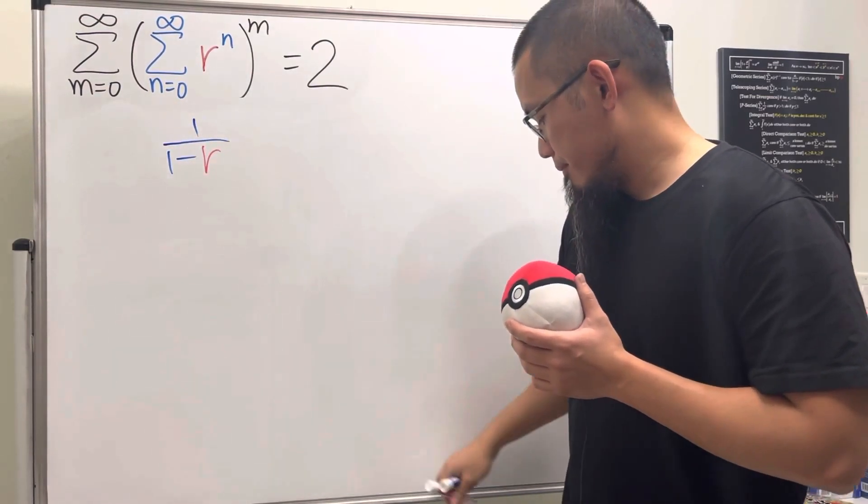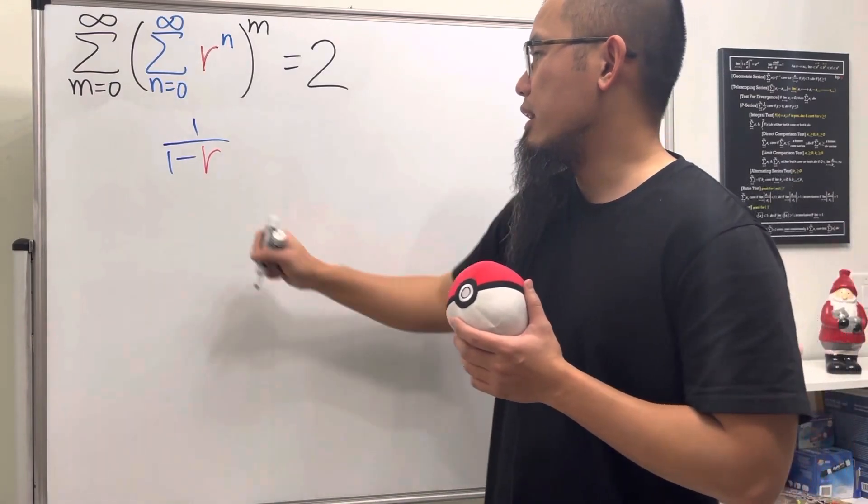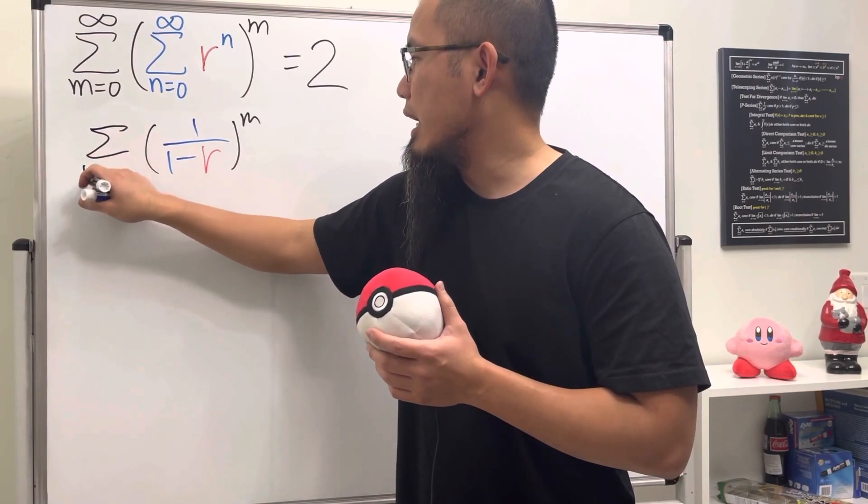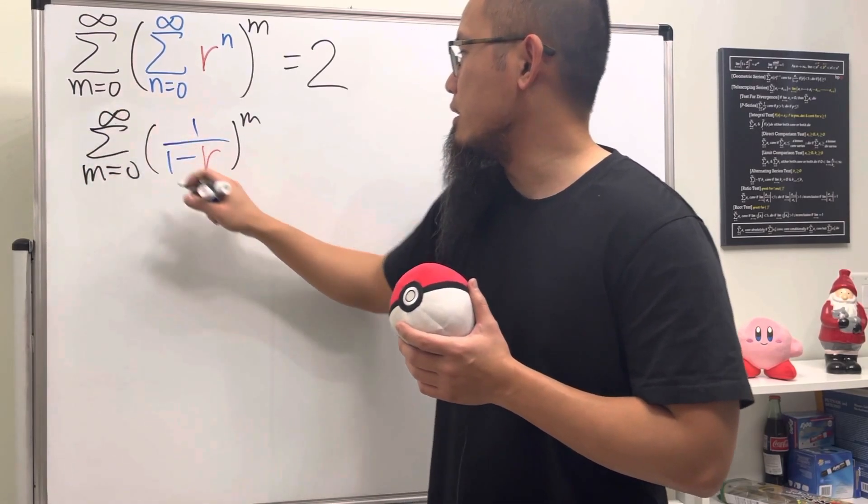And then over one minus the common ratio, which is the r, assuming that does converge. And then after that we will just have this raised to the m's power, and then we do the series as m goes from zero to infinity and make this equal to two.